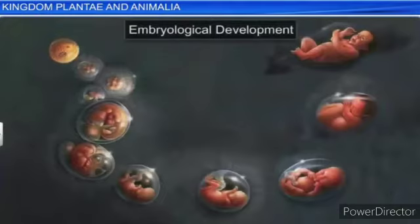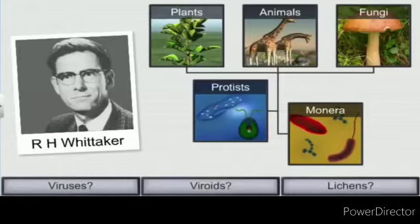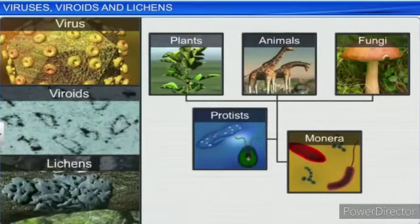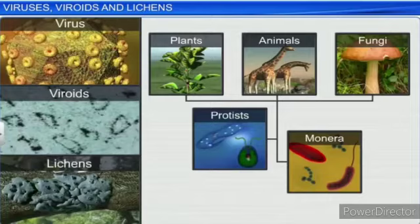Sexual reproduction in animals is by copulation of male and female, followed by embryological development. Various phyla will be described in the next chapters. Now, three organisms are not included in R.H. Whittaker's 5-kingdom classification. In the 5-kingdom classification, there is no mention of acellular organisms like viruses, viroids, and lichens. These are briefly introduced here.